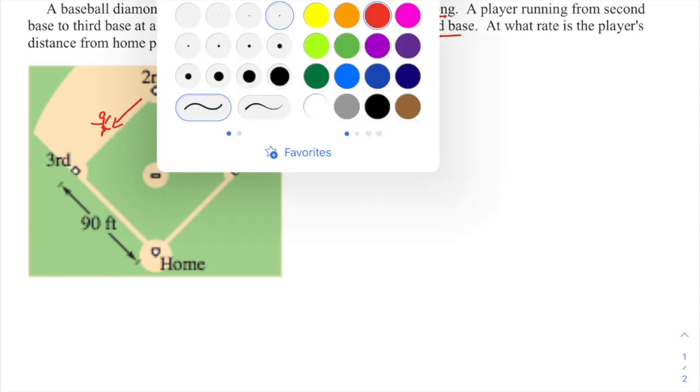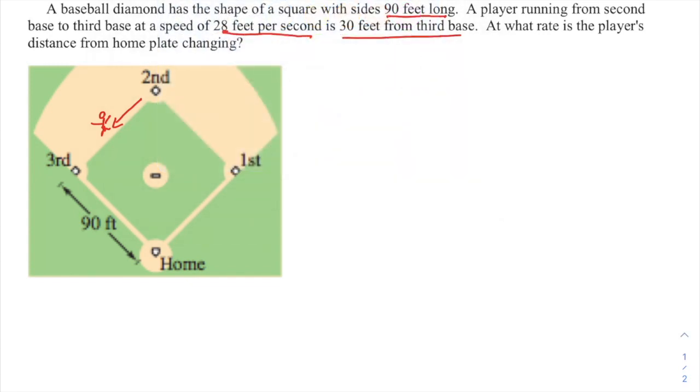Okay, so the player is running in this direction, and we're talking about this segment, the distance to third base being 30 feet, but only for a moment. I don't want to label it as 30—I like to reserve that for things that are fixed and constant. We're talking about the distance from the player to home plate, the rate of change of that distance. So here's the player and here's home plate. Hopefully you can see we've got a right triangle here where this distance is changing. I'll call it x, and this distance is changing, y.